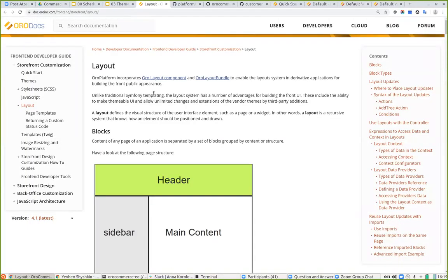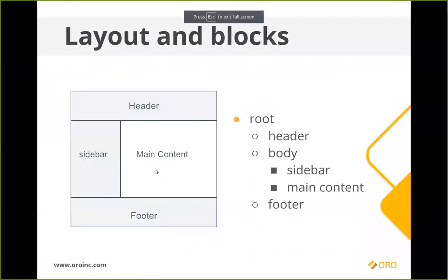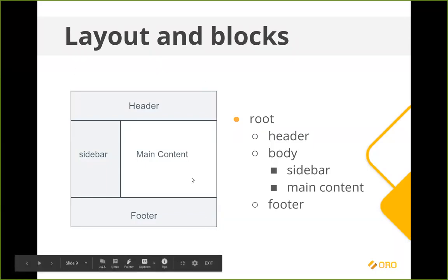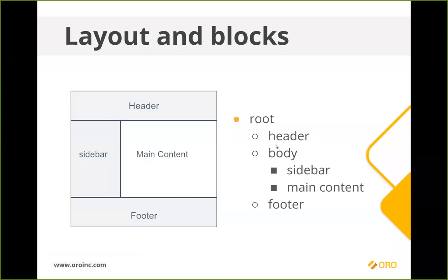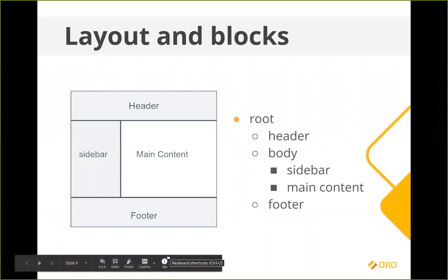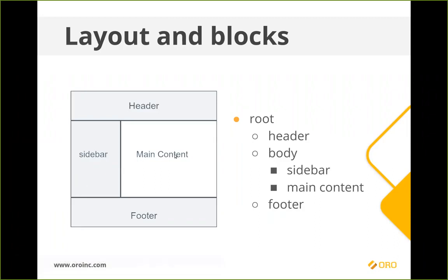A layout is a tree containing multiple blocks. In a very simple example: a root block splits into header, body, and footer, and the body splits into sidebar and main content. Every block is a piece of HTML rendered on the page. The directory structure for layouts is stored under resources/views/layouts/[theme]. This is where the connection between theme and layouts becomes clear — layouts and layout updates are always connected to a specific theme.